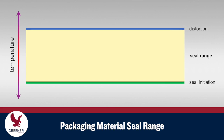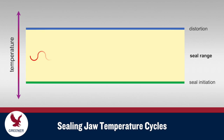A material seal range is defined as the difference between a seal initiation temperature and the distortion temperature. A wide seal range allows for normal variability within the packaging process, with a main source of this variability being the normal temperature cycle of the sealing jaws.